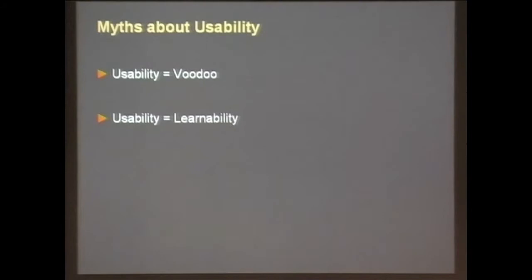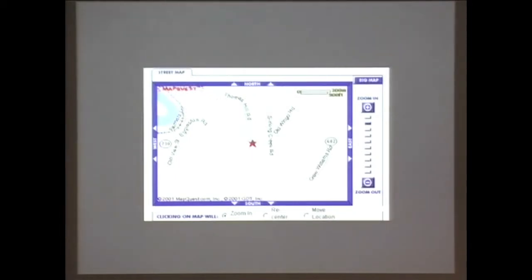Myth number two: there's the perception that usability is only about learnability — how quickly I can learn an interface I've never seen before. This comes from usability being applied to the web, where most visitors are new. But we want to go beyond that in visualization and biology. For example, before Google Maps, map interfaces were clunky — you had to click to page over. That's not about learnability; both are easy to learn. The difference is that Google Maps is much faster to use. It's more about performance, not so much about learnability.